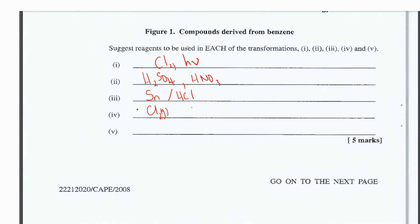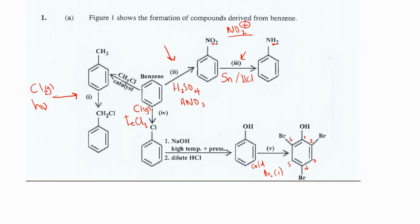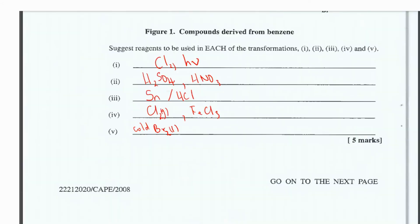In part four, as stated, going from benzene to chlorobenzene, we need chlorine and a catalyst, which is ferric chloride. In part five, going from phenyl to 2,4,6-tribromophenol, we need cold liquid bromine, which is also a diatomic molecule (Br₂).